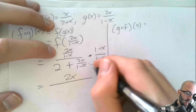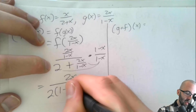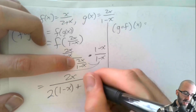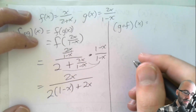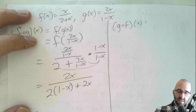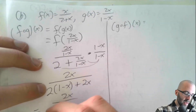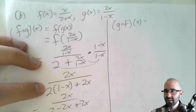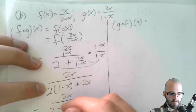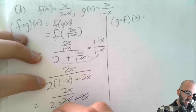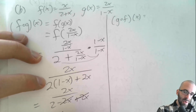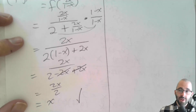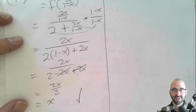On the bottom, distribute (1−x) to both terms: 2 times (1−x) gives 2−2x, plus the 2x term where (1−x) cancels, leaving 2x. So the denominator becomes 2−2x+2x. The −2x and +2x cancel, leaving just 2. So we have 2x over 2, which is just x. That's exactly what we wanted, so they're probably inverse functions — but we have to check the other direction as well.